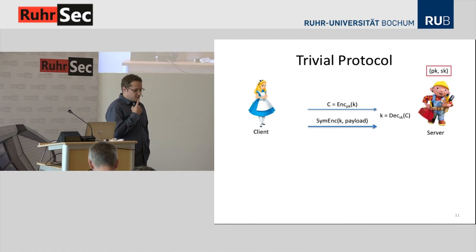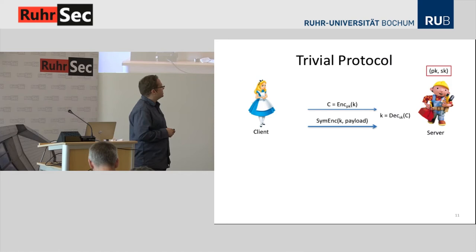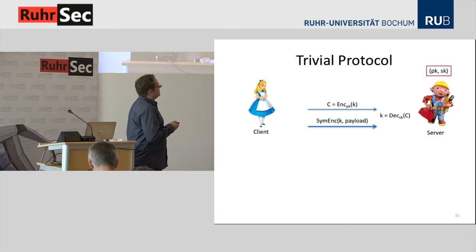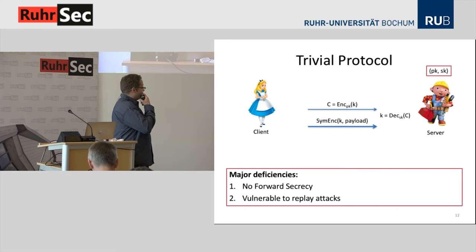In principle, it's very easy to achieve zero-round-trip-time by just using public key encryption. The client uses the public key of the server to encrypt the session key, sends it to the server, and then the session key is used to encrypt the actual payload — and we have achieved zero-round-trip-time. But this simple protocol has two major deficiencies: it doesn't provide any forward secrecy, and second, it's vulnerable to replay attacks.